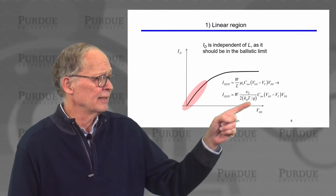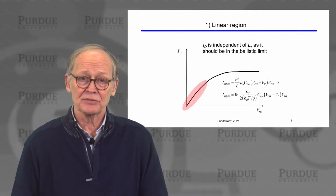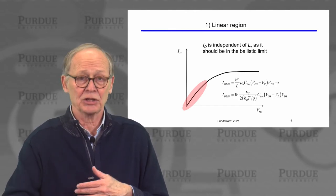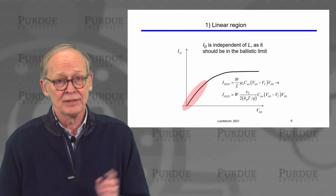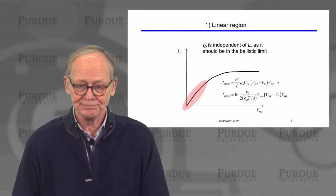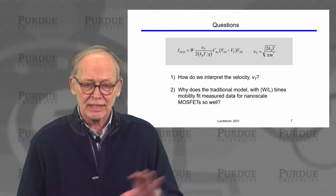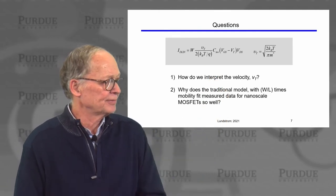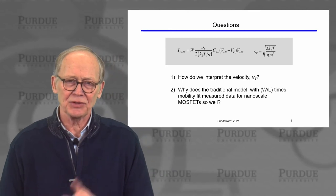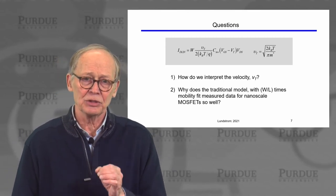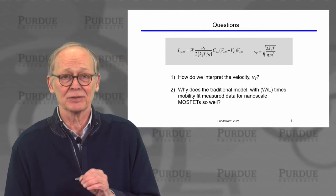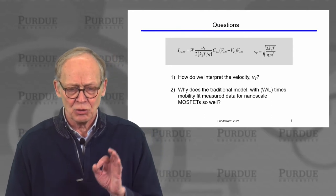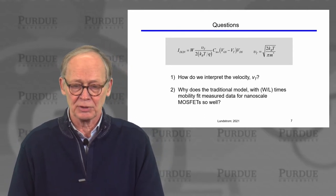In the ballistic device, the current is independent of channel length. You would expect this because the longer the channel, it doesn't make any difference — an electron that comes in from the source is going to go out the drain, there is no scattering, so channel length plays no role. Let's talk a little more about this unidirectional thermal velocity, because it's an important velocity and we'll see it again in the next two lectures.